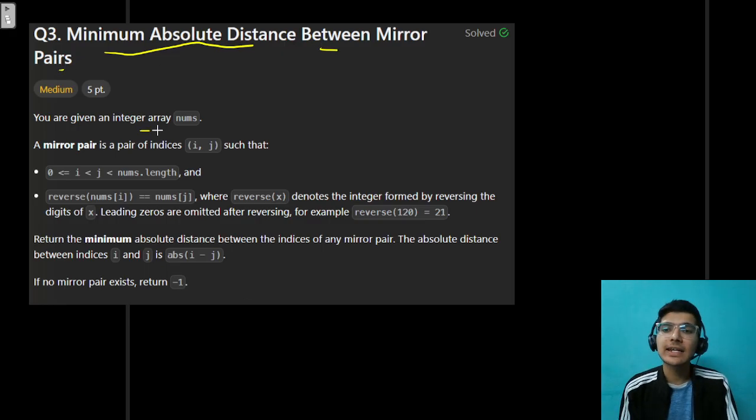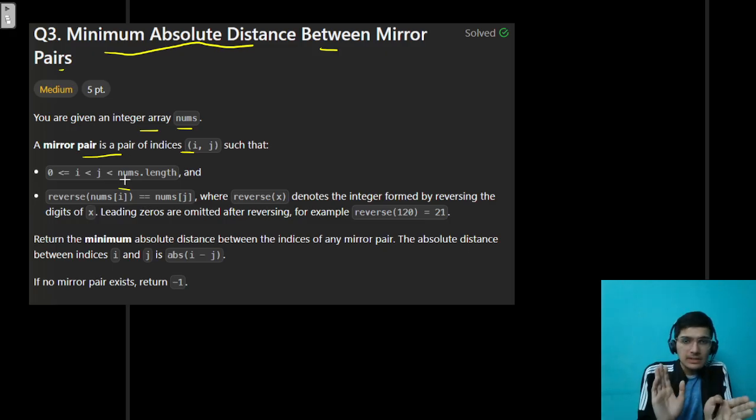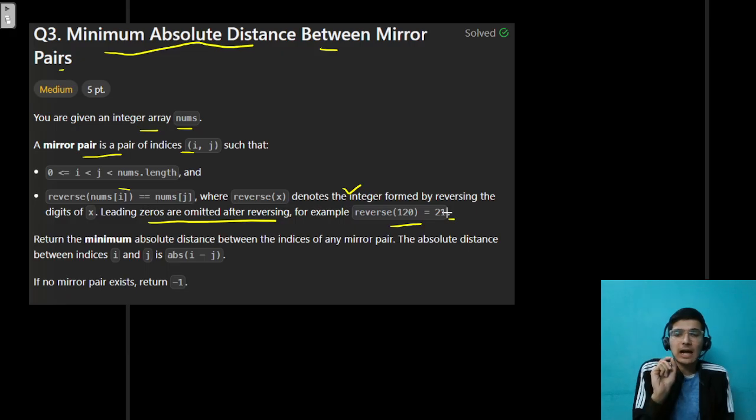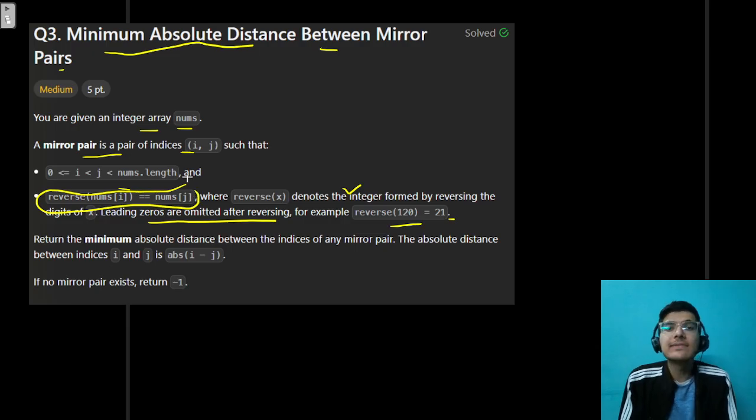Given an integer array nums, a mirror pair is a pair of indices such that if you do reverse that same number, you get the same number. Denotes the integer. Leading zeros are omitted after reversing. That is also very important. Reverse of 120 is 21. Now, what people miss in this question I believe is this part.